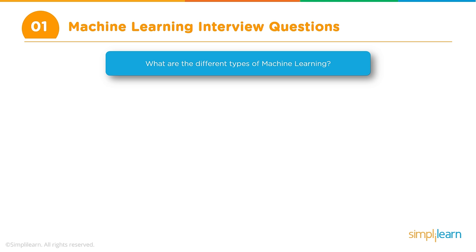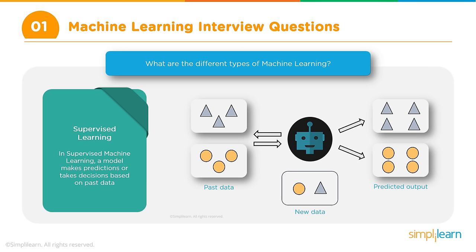One of the first questions you may face is: what are the different types of machine learning? There are three types of machine learning. It's better to emphasize that there are actually two main types — supervised and unsupervised — and then there is a third type which is reinforcement learning.